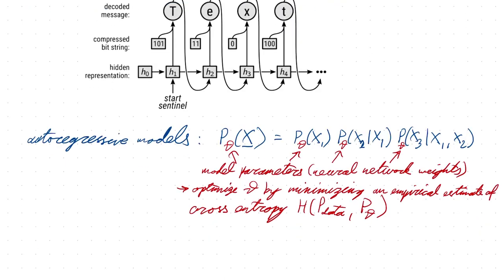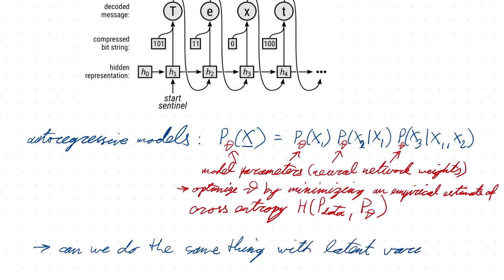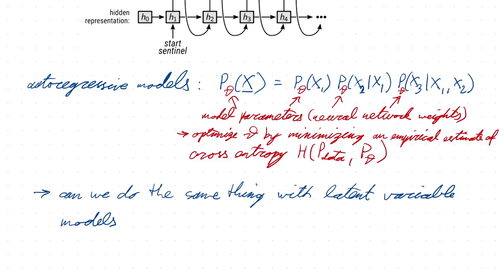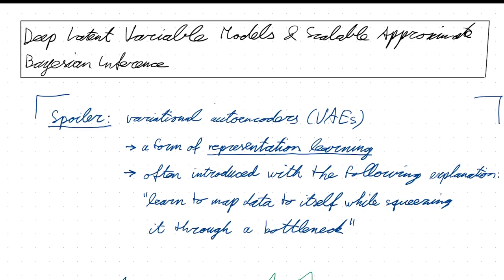This was fairly straightforward with autoregressive models, because these models literally just parameterize the probability distribution over the data. Now the question I'd like to answer in this video is: can we do the same thing with latent variable models? Can we pose latent variable models with free parameters — say, neural network weights — and then learn these networks so that we can perform optimal compression with them? You'll see in a minute that latent variable models are more complicated, because they parameterize a probability distribution not only over your message but also over latent variables that are not part of your message.